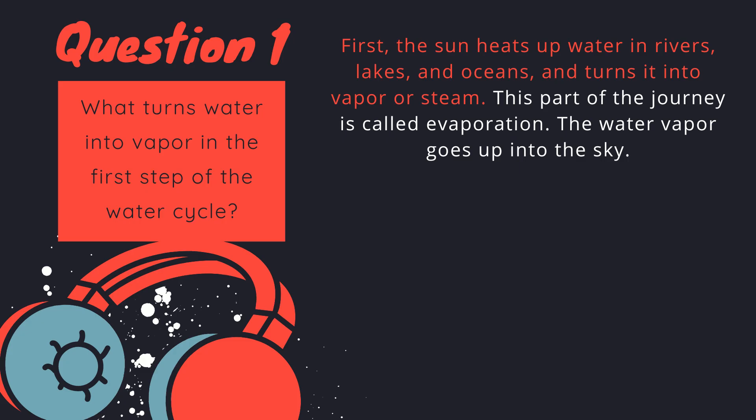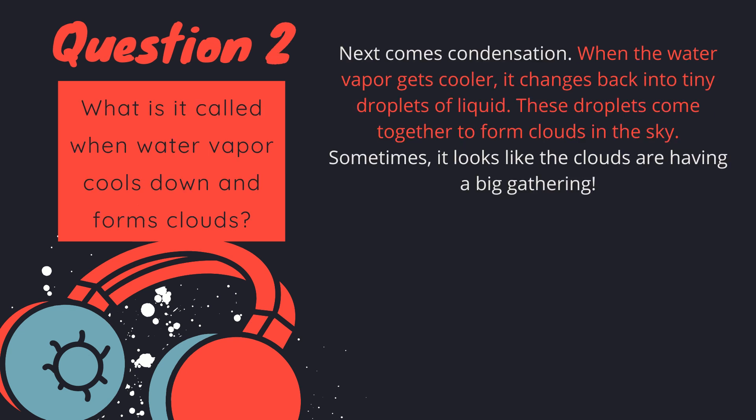Let's review the answers and learn more about the water cycle. Question number one: What turns water into vapor in the first step of the water cycle? C. The sun heats up water and turns it into vapor. This first step is called evaporation. Question number two: What is it called when water vapor cools down and forms clouds? C. When water vapor cools down and forms clouds, it's called condensation. This is how clouds are made.